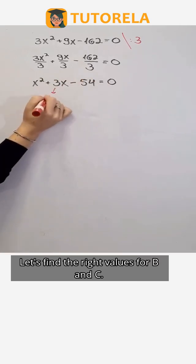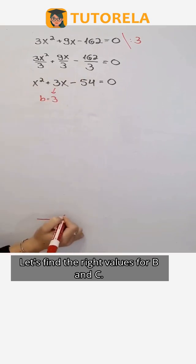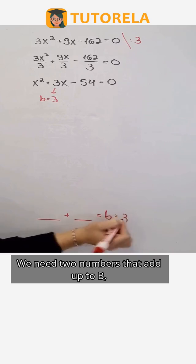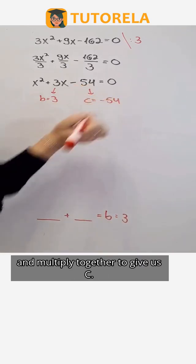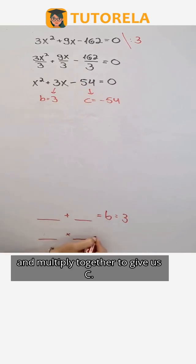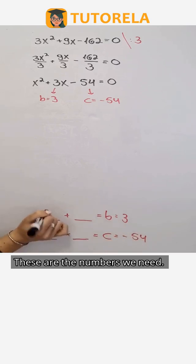Let's find the right values for B and C. We need two numbers that add up to B and multiply together to give us C. These are the numbers we need.